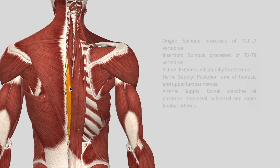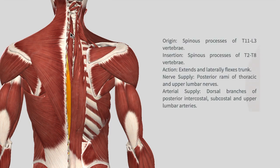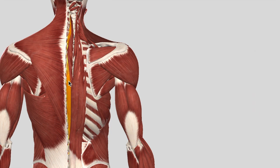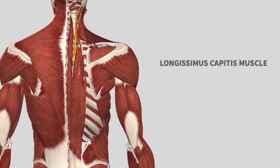For the spinalis thoracis, the origin is T11 to L3 and the insertions are in the vertebrae above. Again it extends and laterally flexes the trunk. So the spinalis has two groups: cervicis and thoracis. It does not have a capitis nor a lumborum.